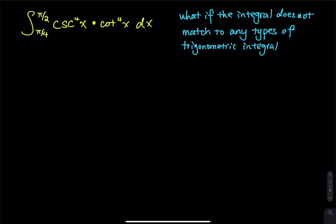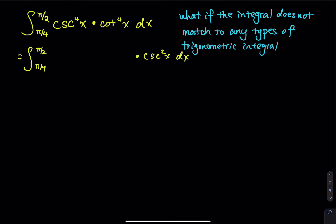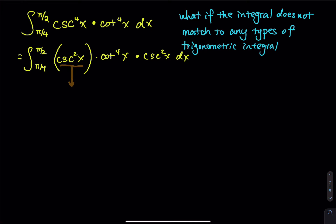Let's take a look at this problem. The first thing I would like to do is reduce the power of cosecant. I would like to factor out cosecant squared. So that means the cosecant to the fourth now becomes cosecant squared x. Let's don't touch the cotangent — keep the cotangent to the fourth power. Then I would like to use one of the fundamental identities to rewrite the cosecant: cosecant squared equals cotangent squared x plus 1. And then the rest: cotangent to the fourth times cosecant squared x dx.